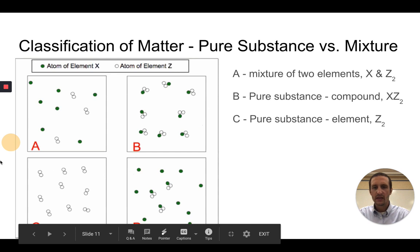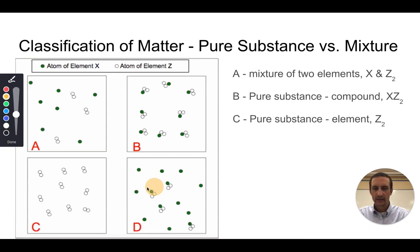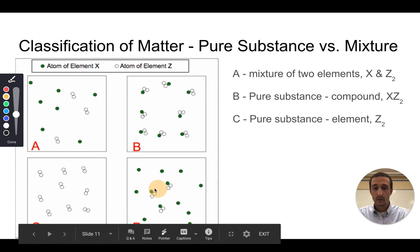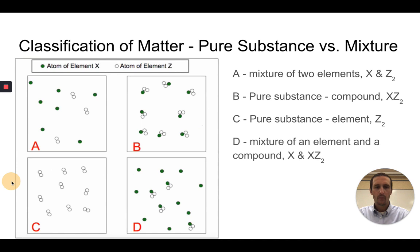Now D looks like there is some of these compounds, XZ2, and there's also atoms of element X. So this one would be classified as a mixture of an element and a compound. We would call it a mixture of X and XZ2.